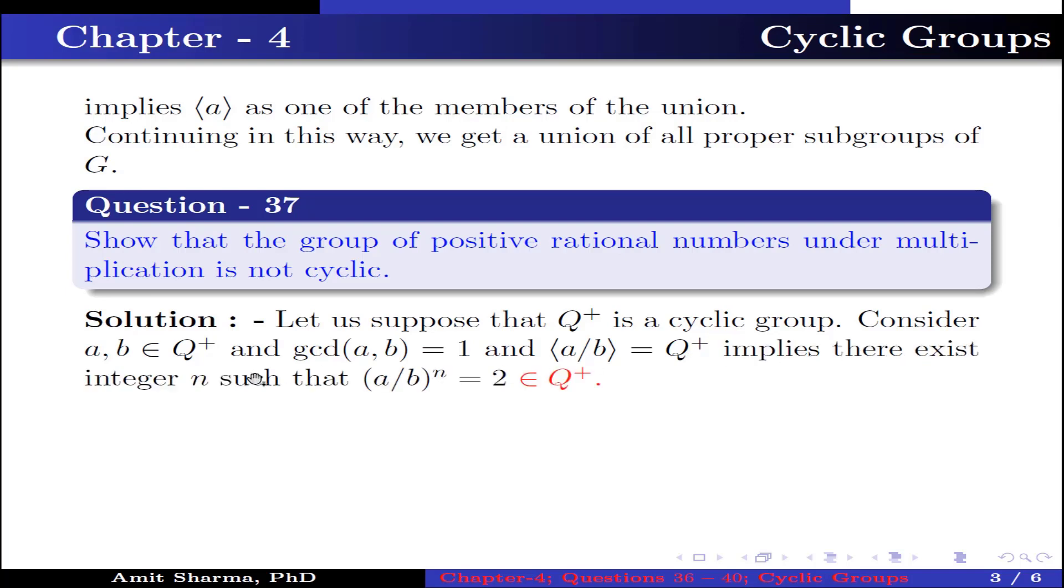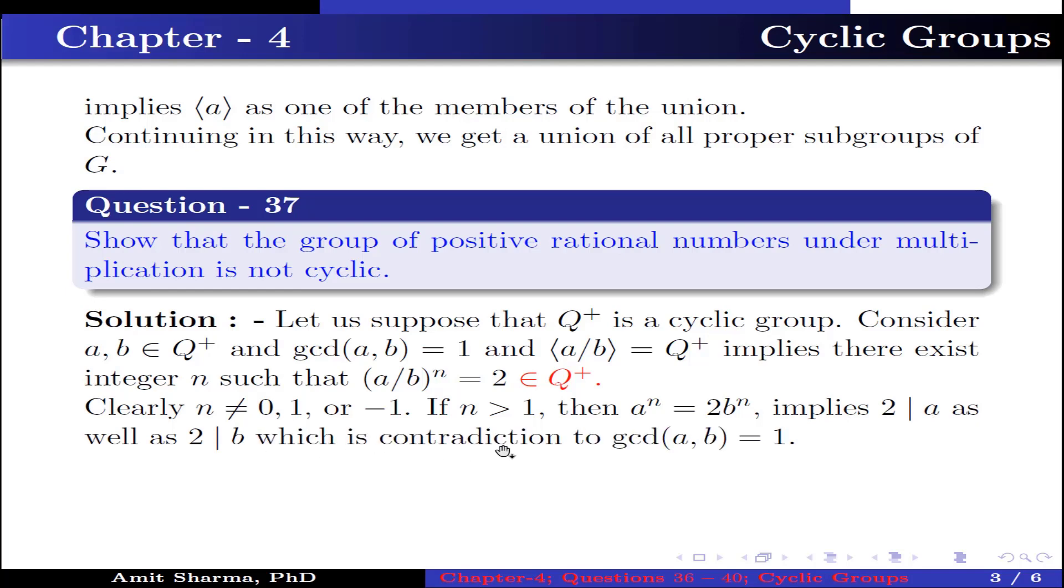This implies there exists an integer n such that (a/b)ⁿ = 2, as 2 is a positive rational number. Clearly n cannot be 0, 1, or -1, because if we take n as 0, 1, or -1, we cannot generate 2. Now if we take n greater than 1, then aⁿ can be written as 2·bⁿ. This implies 2 divides a as well as 2 divides b, which is a contradiction because gcd(a,b) = 1.